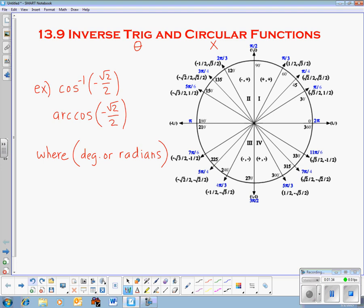But where, back to my question, where in degrees or radians does cosine equal negative square root of 2 over 2? That's the question you need to answer. So, let's just look at our unit circle over here. Cosine is my x value, and it's negative, so I'm going to be on the left. And negative square root of 2 over 2 is right here. So, the answer to this question is 135 degrees.